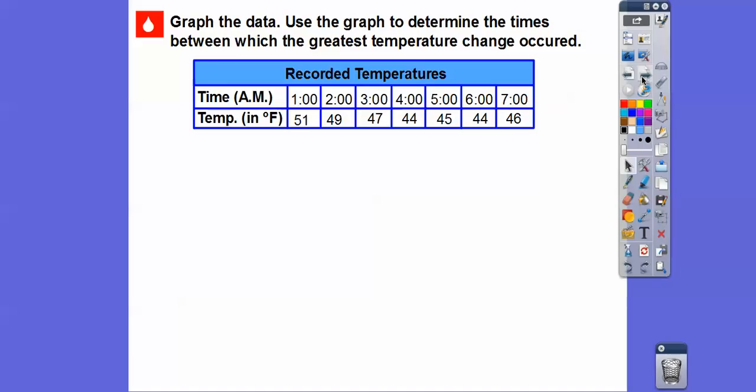And we'll talk about all of those definitions. So we're going to graph this data and use the graph to determine the times between which the greatest temperature change occurred. Okay, so it looks like we recorded the temperatures in the morning. So this is 1 o'clock in the morning, which is after midnight, at nighttime. 2 o'clock, 3 o'clock, 4 o'clock. And here's the temperatures.